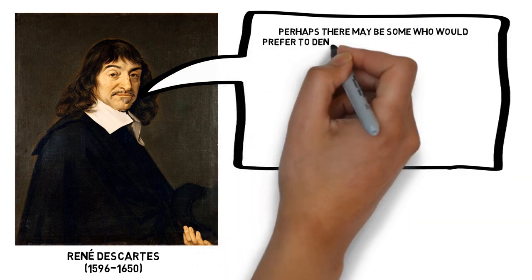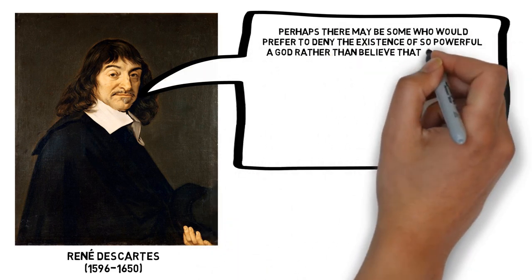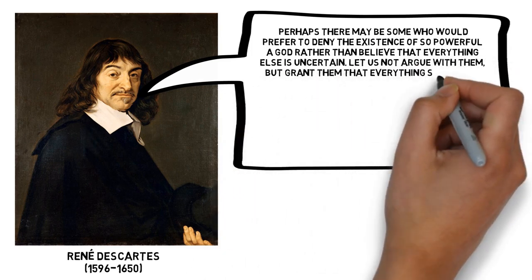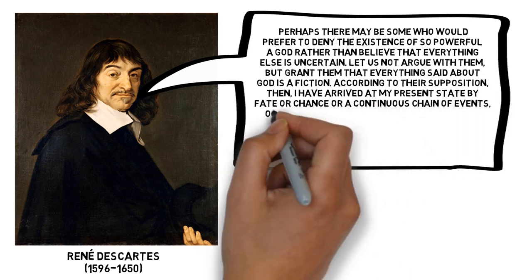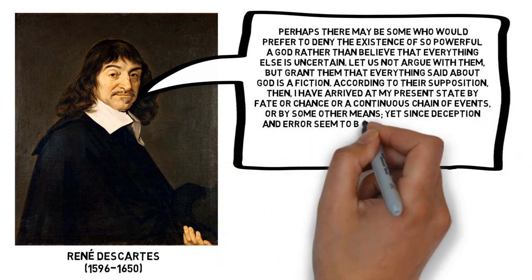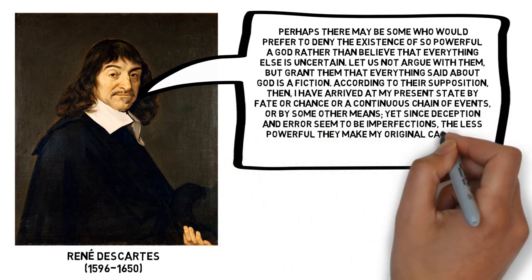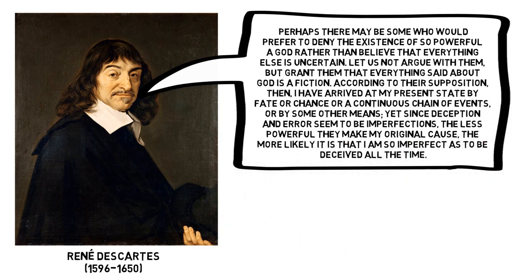He writes, Perhaps there may be some who would prefer to deny the existence of so powerful a god, rather than believe that everything else is uncertain. Let us not argue with them, but grant them that everything said about god is a fiction. According to their supposition, then, I have arrived at my present state by fate, or chance, or a continuous chain of events, or by some other means. Yet since deception and error seem to be imperfections, the less powerful they make my original cause, the more likely it is that I am so imperfect as to be deceived all the time.